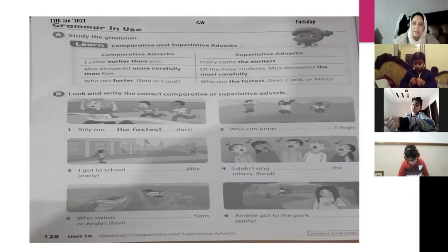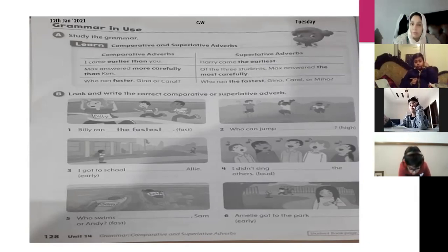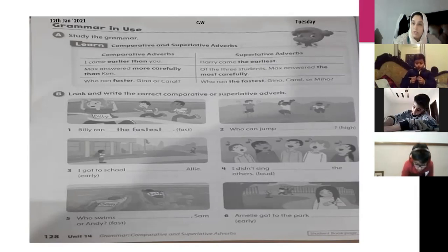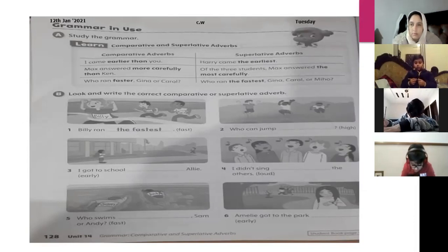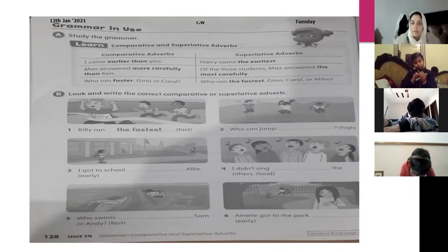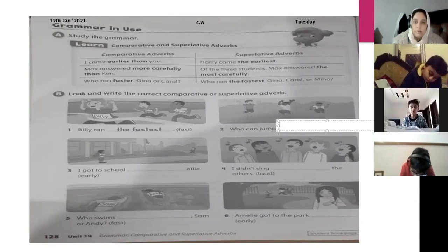'Who can jump ___?' The word given in brackets is 'high.' If you look at the picture, we will be using the superlative adverb here. So: 'Who can jump the highest?' Write that down — 'who can jump the highest.'